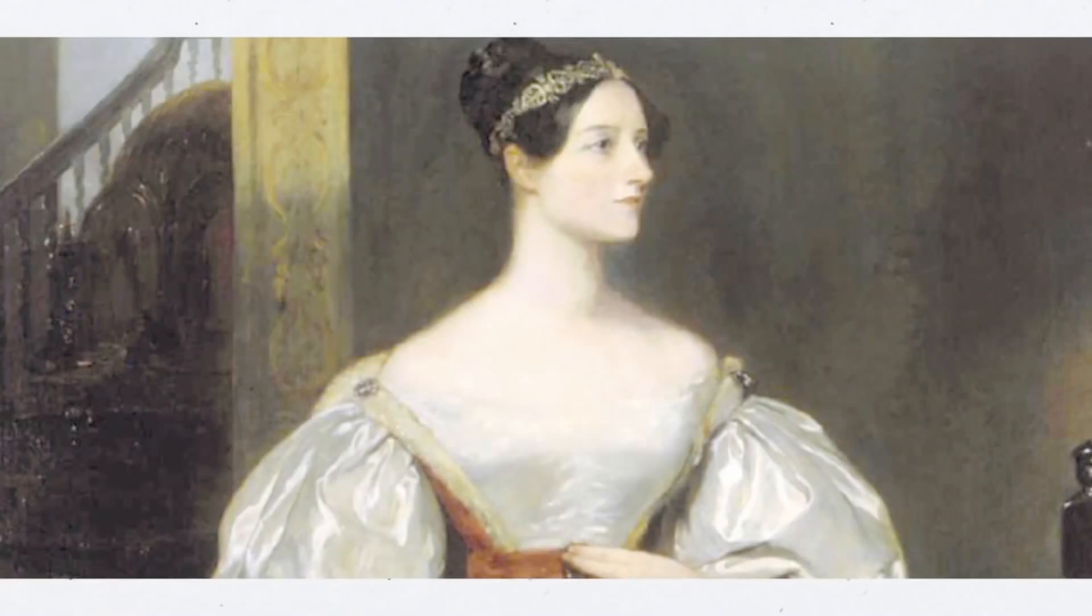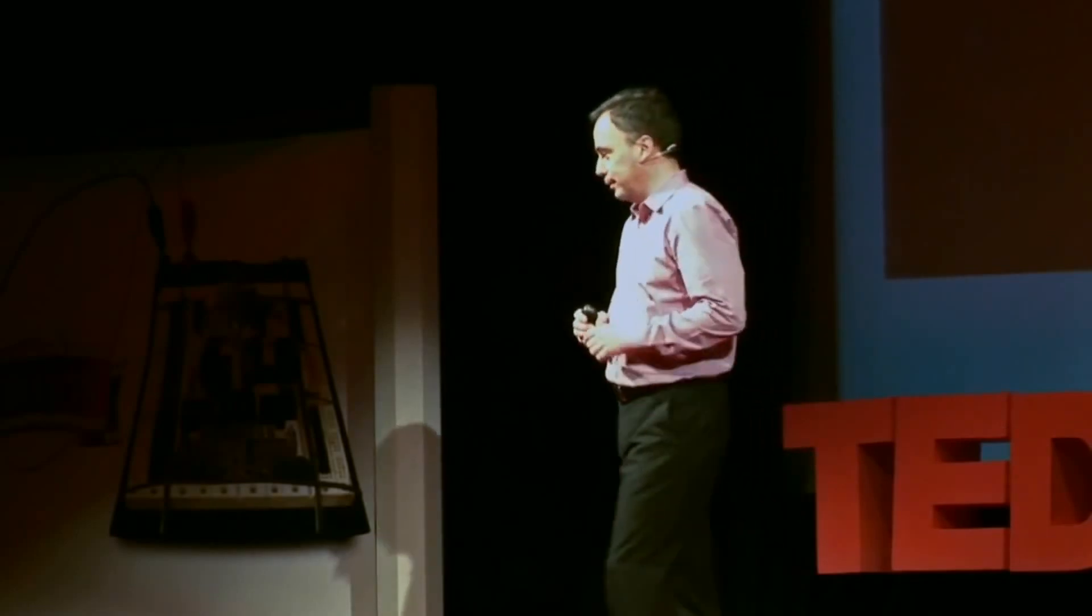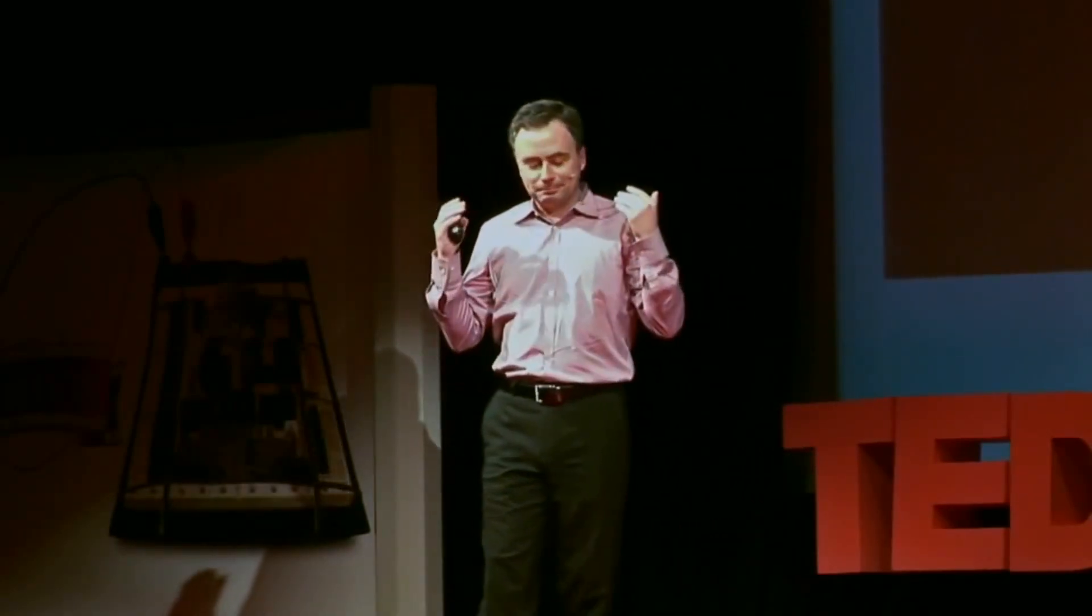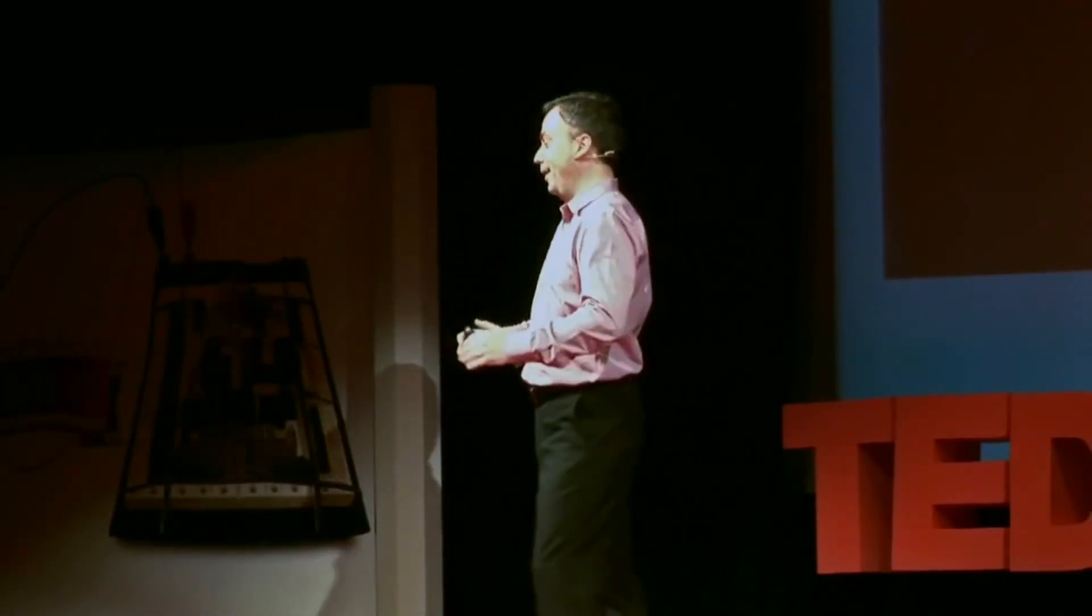Along comes this woman, Ada Lovelace. Now, imagine these soirees, all these great and good comes along. This lady is the daughter of mad, bad, and dangerous to know Lord Byron. And her mother, being a bit worried that she might have inherited some of Lord Byron's madness and badness, thought, I know the solution. Mathematics is the solution. We'll teach her mathematics. That will calm her down, because, of course, there's never been a mathematician that's gone crazy. So everything will be fine.